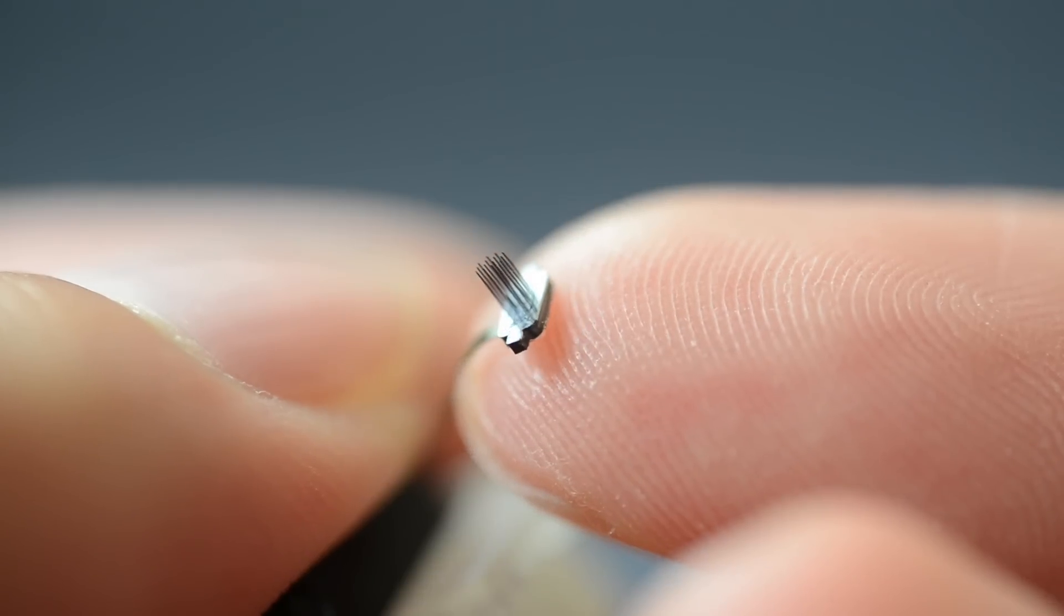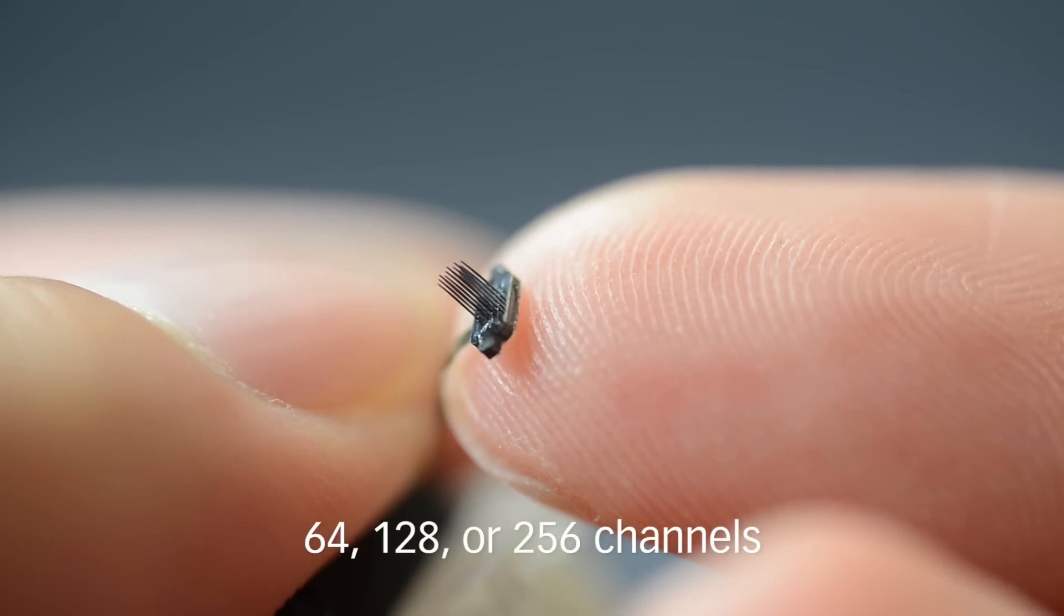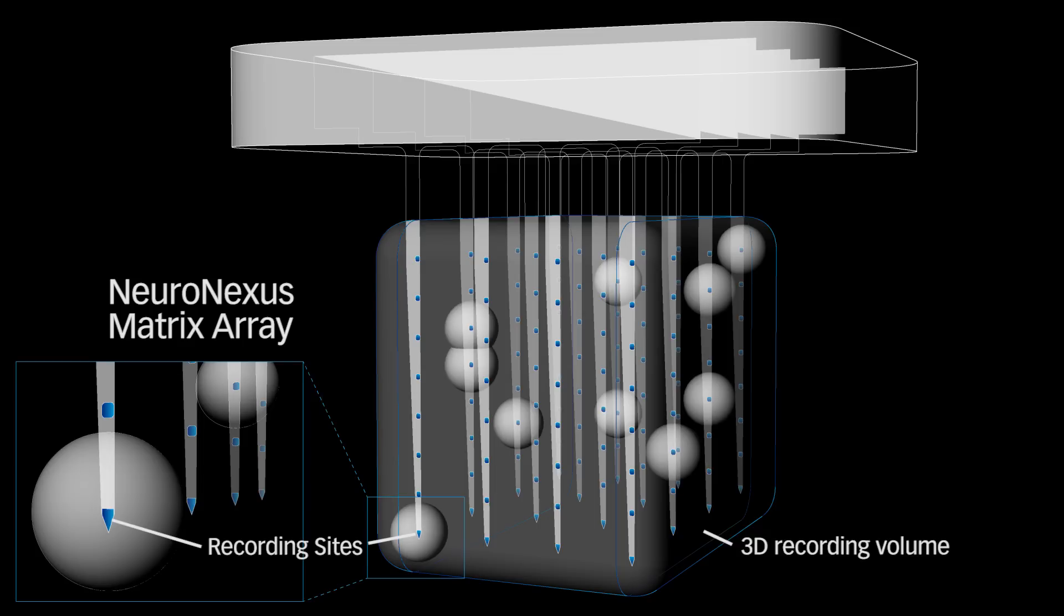The NeuroNexus Matrix Array is a next-generation probe that opens up a new dimension in neural interfaces. It breaks from current restrictions of conventional floating arrays, expanding from a two-dimensional recording plane to a three-dimensional volume, enabling simultaneous recording and stimulation in both cortical columns and layers.